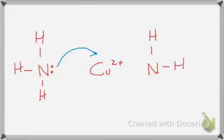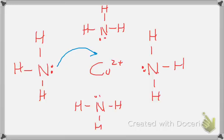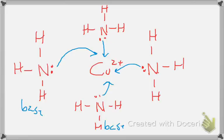How many ammonias can attach to copper? The rule of thumb is: whatever the charge on the transition metal is, double that number — that tells you how many ligands can attach to the central atom. Cu2+ has a charge of 2, so doubled gives 4. That means 4 ammonias can attach to it. All 4 ammonias attach to the copper in the middle; this +2 charge attracts all those lone pairs, making all the ammonias bases and the copper the electron acceptor — the acid.